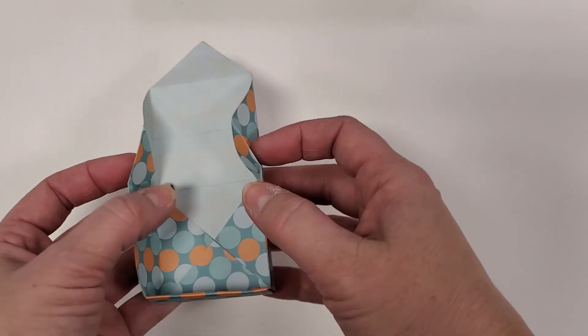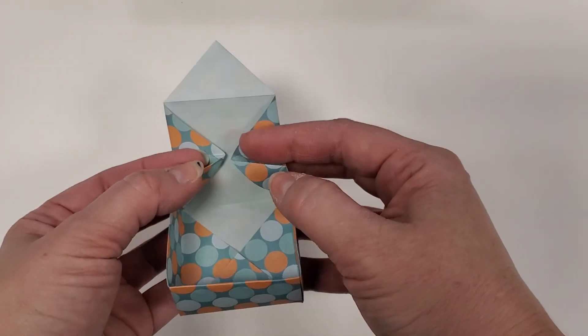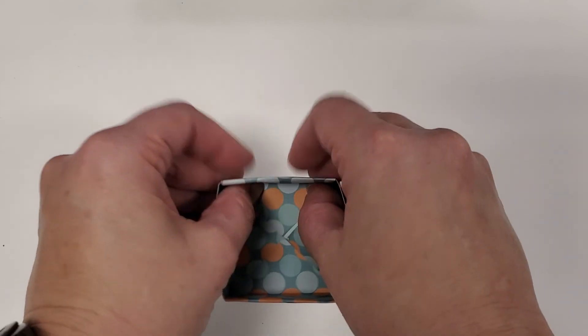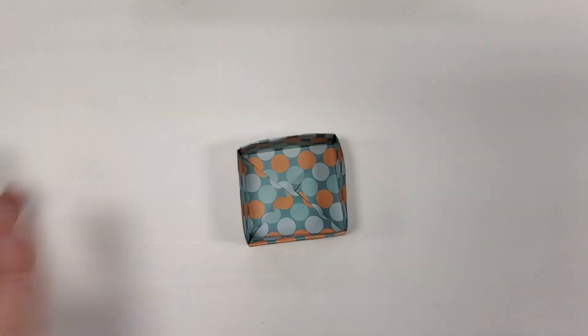So I'll show you again. As these sides are standing up we're going to push these corners in and then fold the box down just like that. And that is a simple origami box.